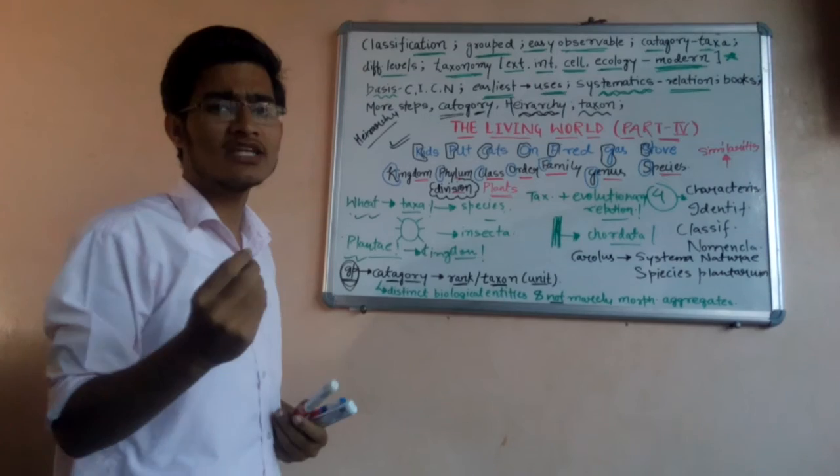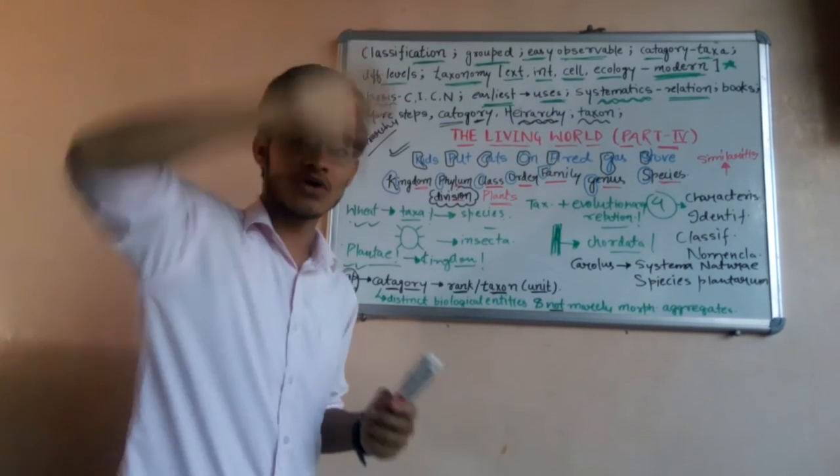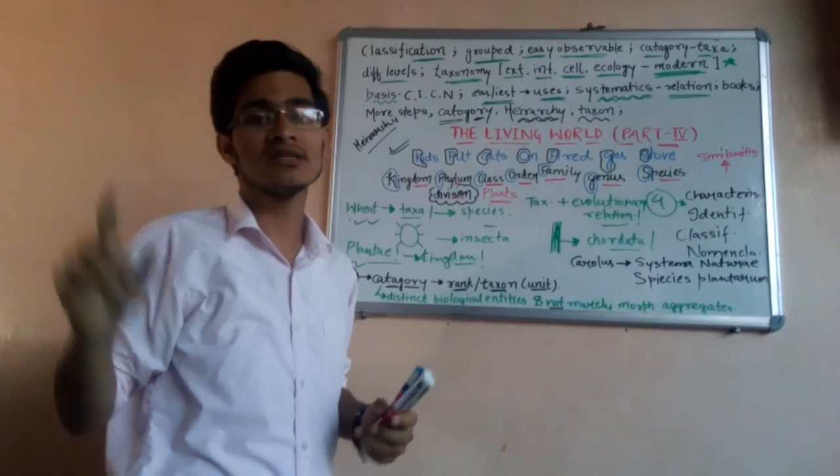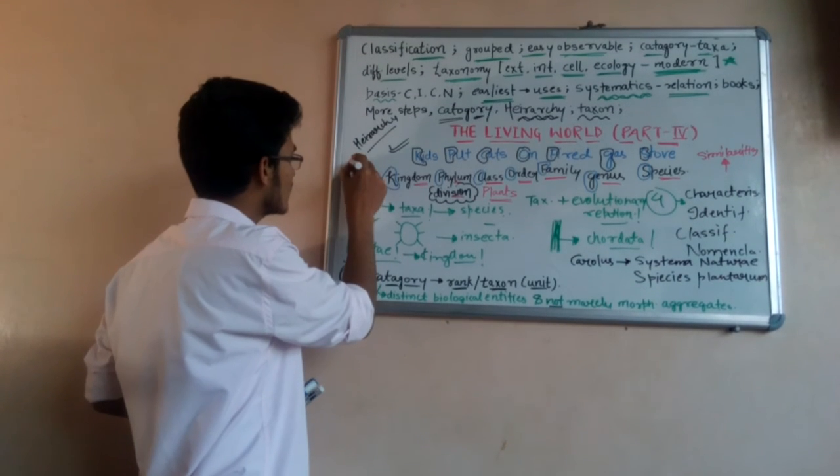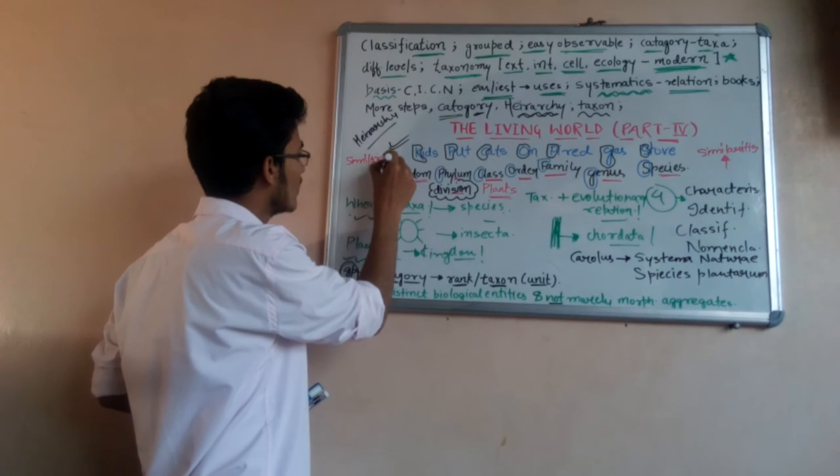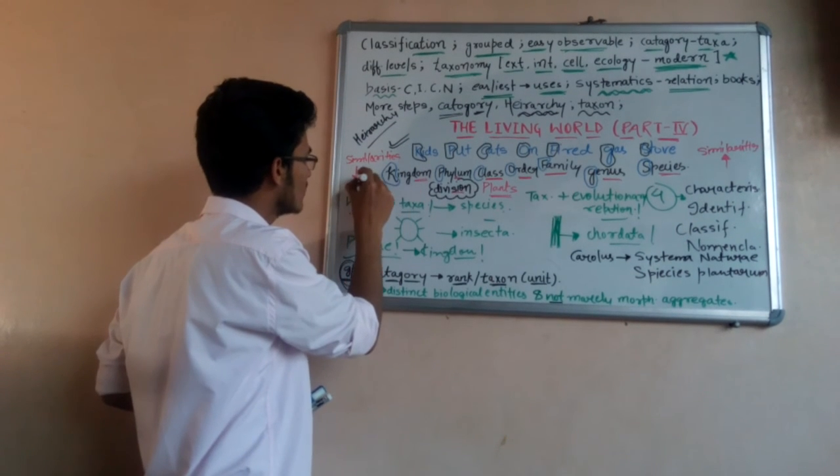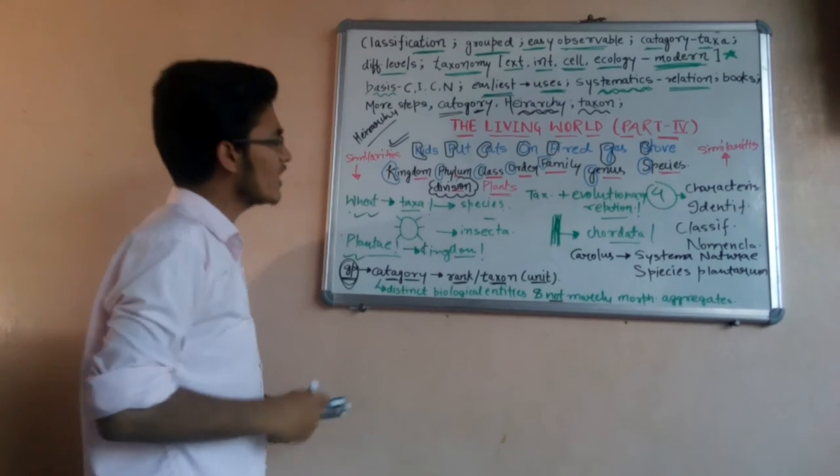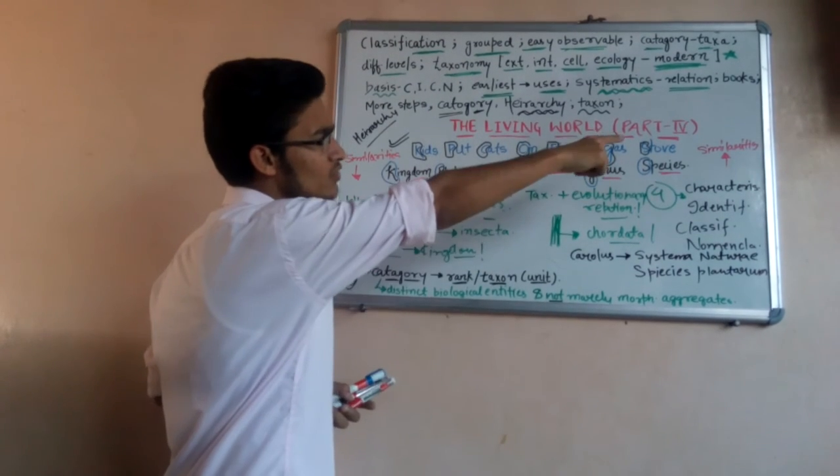According to Whittaker's system of classification, there are only five kingdoms, so there is huge diversity of organisms in a particular kingdom. When we talk about kingdom, the similarities are going to be decreased. As we move from kingdom to species, the similarities go on increasing, and when we go from species to kingdom, the similarities decrease.